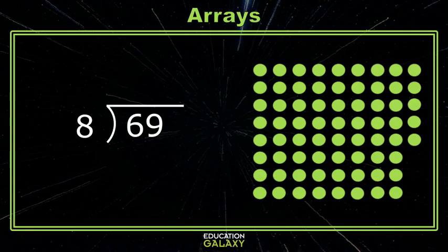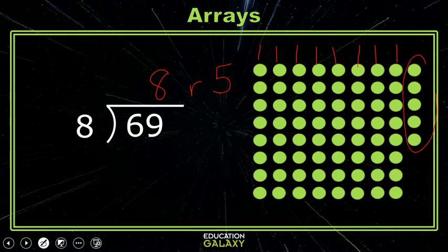Now that would be 1, 2, 3, 4, 5, 6, 7, 8 groups of 8 with 5 left over. So our answer is 8 remainder 5.